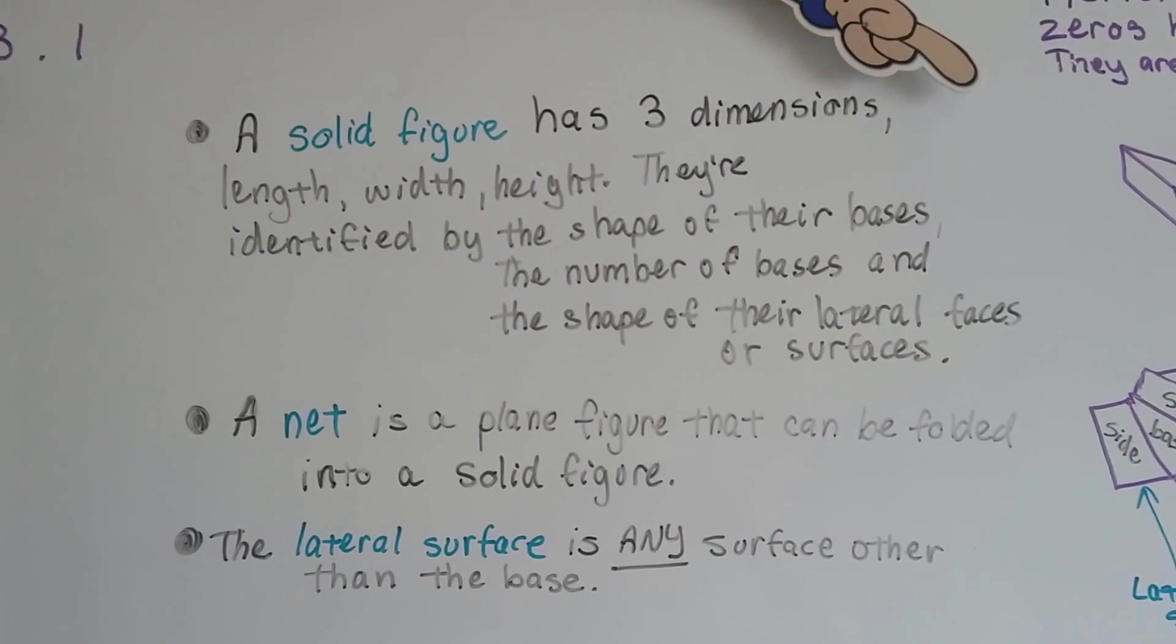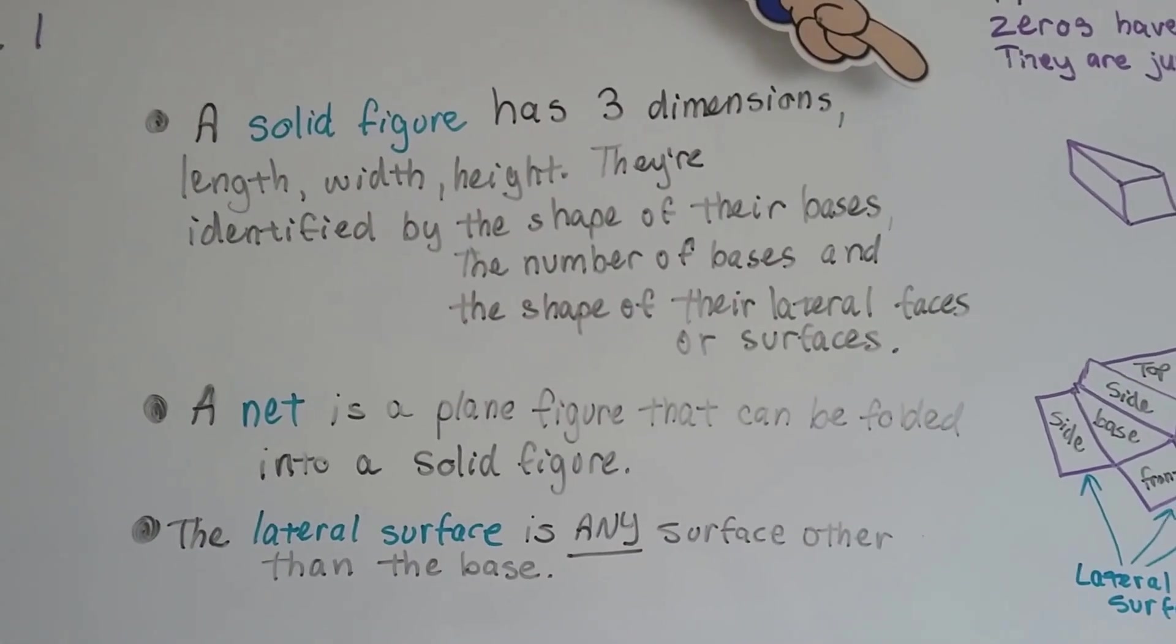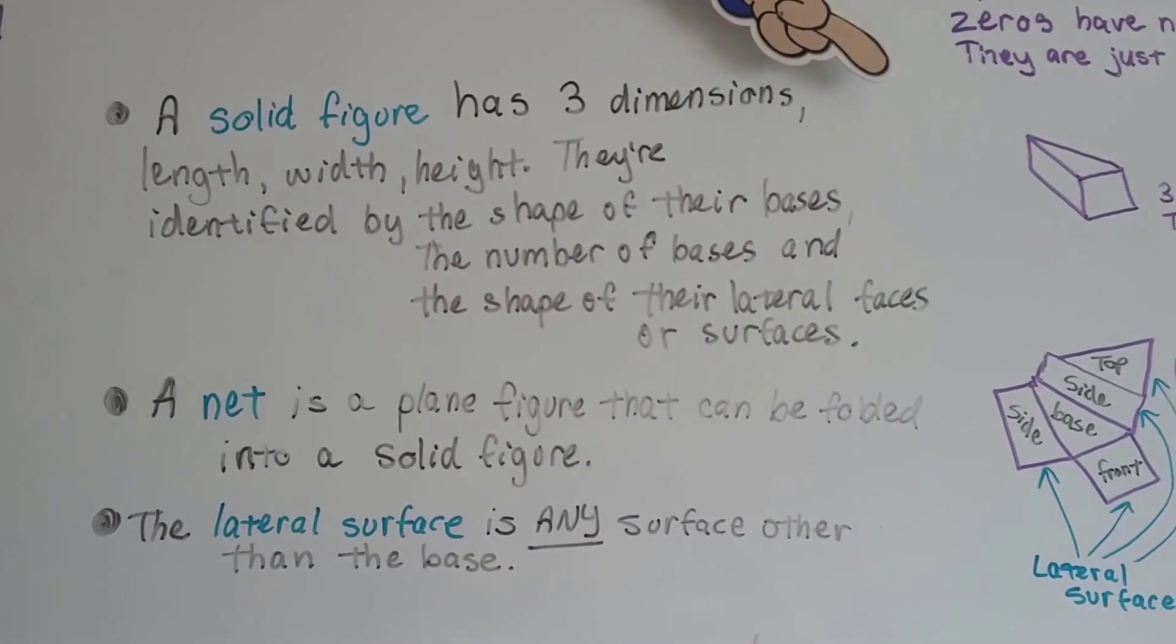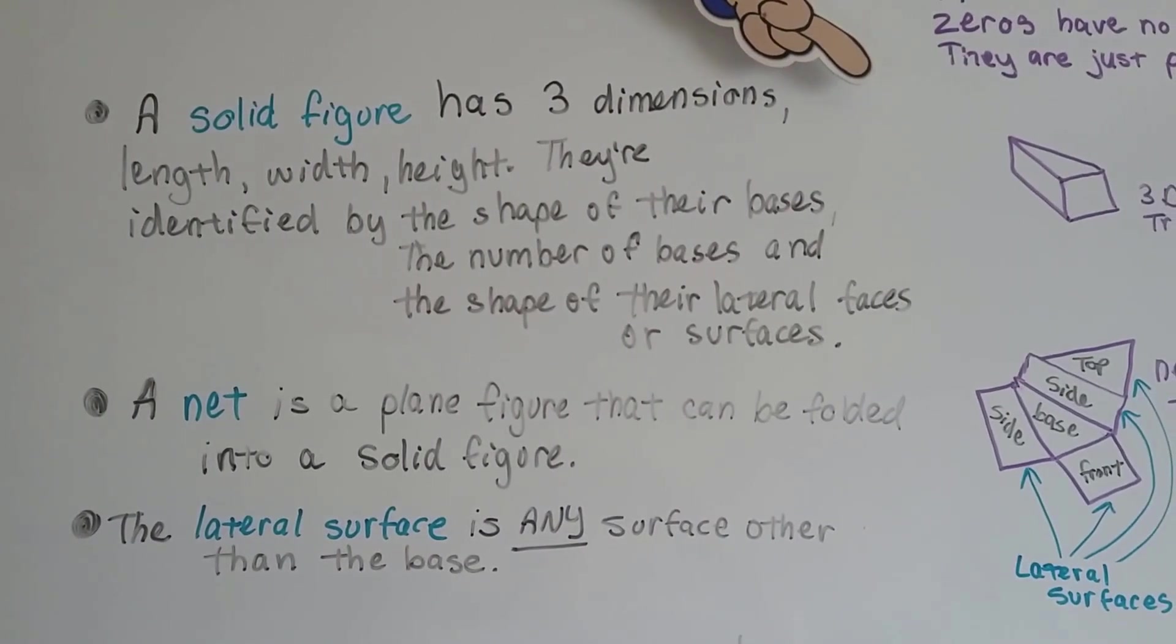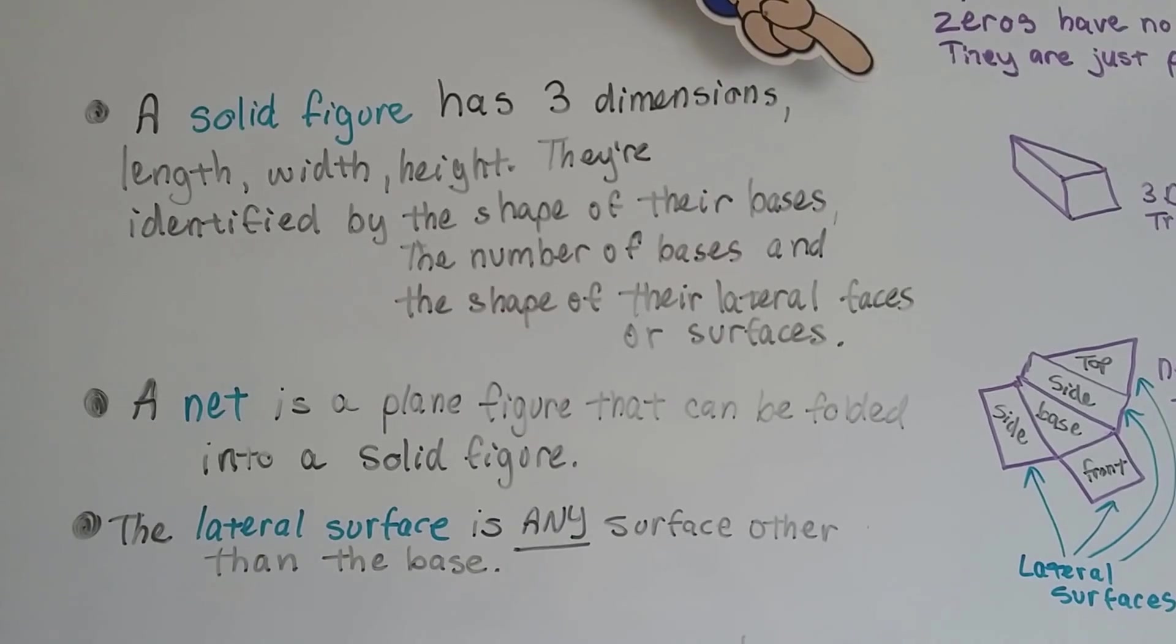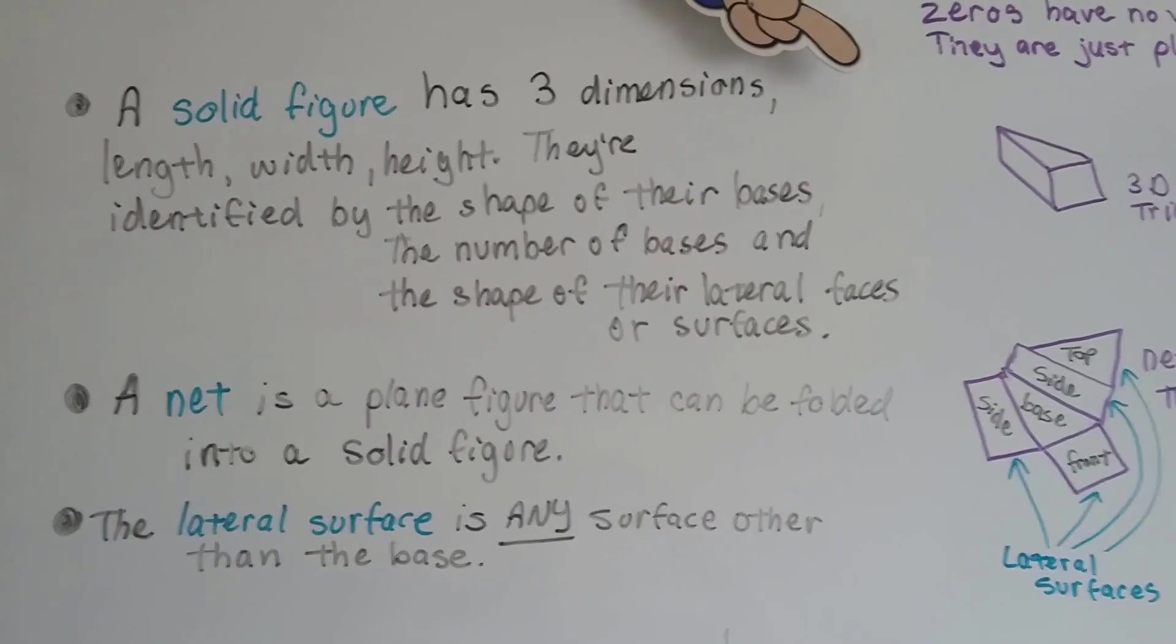A solid figure has three dimensions: length, width, and height. They're identified by the shape of their bases, the number of bases, and the shape of their lateral faces or surfaces. A net is a plane figure that can be folded into a solid figure.